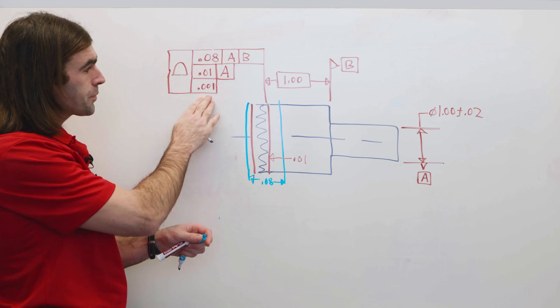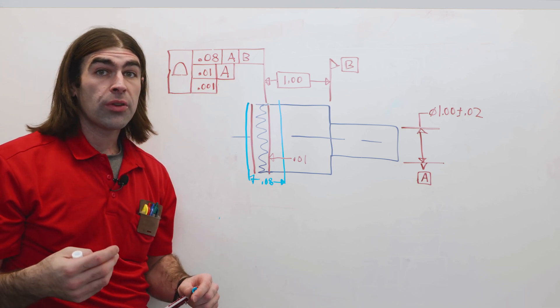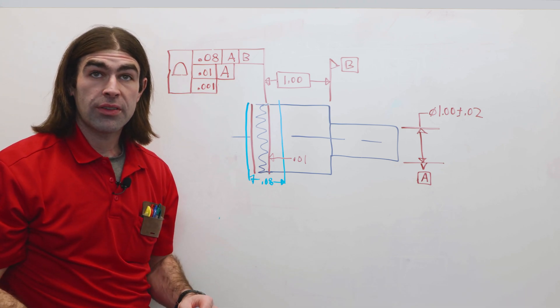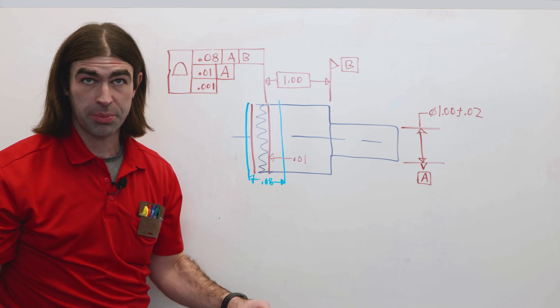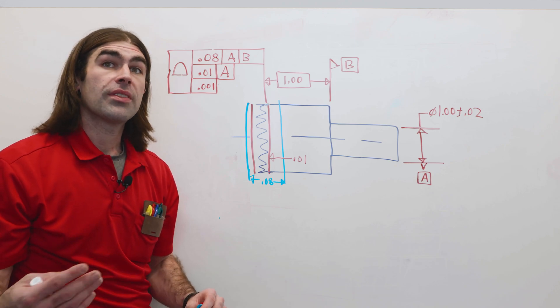Now, the last one, one thousandths with no datum reference. So if it doesn't have a datum reference, it's a form tolerance. It has to be. All form tolerances are individual requirements. It's a tolerance to itself.